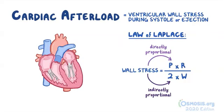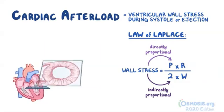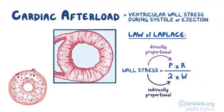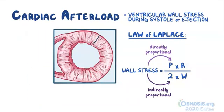To visualize this, let's look at a cross-section of the left ventricle, which looks a bit like a doughnut with little dough — a diet doughnut, if you will. The doughnut circle represents the wall of the left ventricle, and its thickness is the ventricular wall thickness, or w.